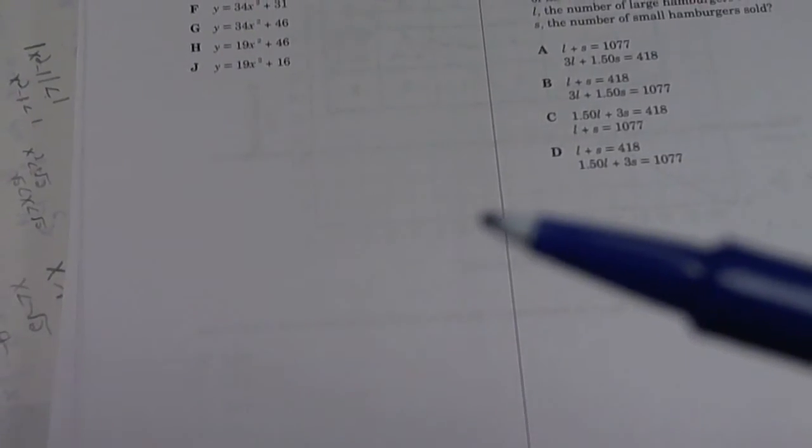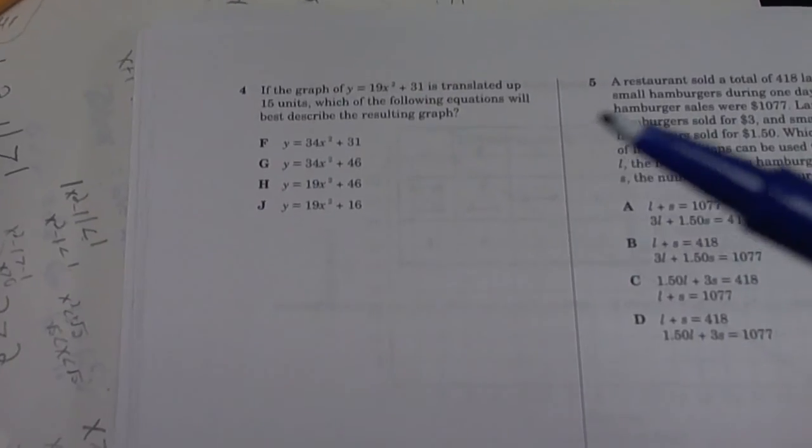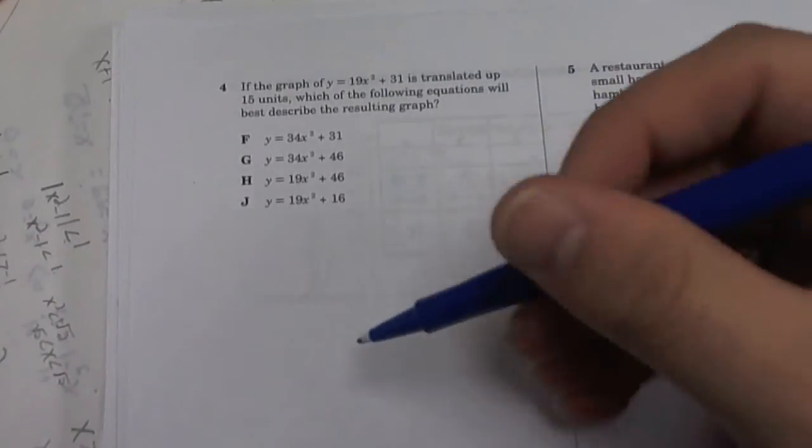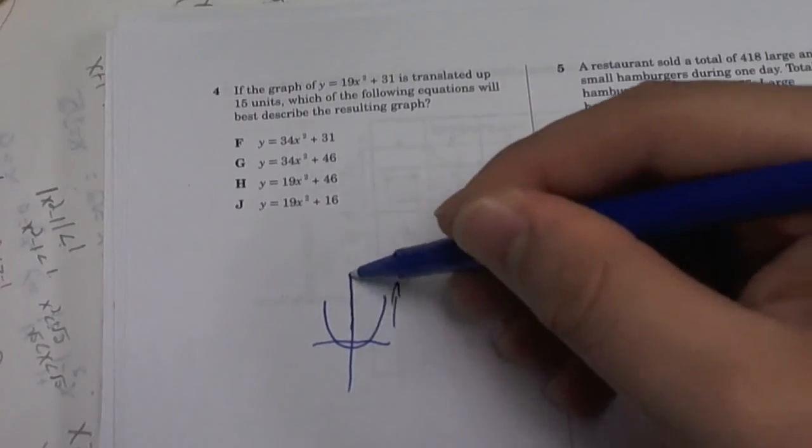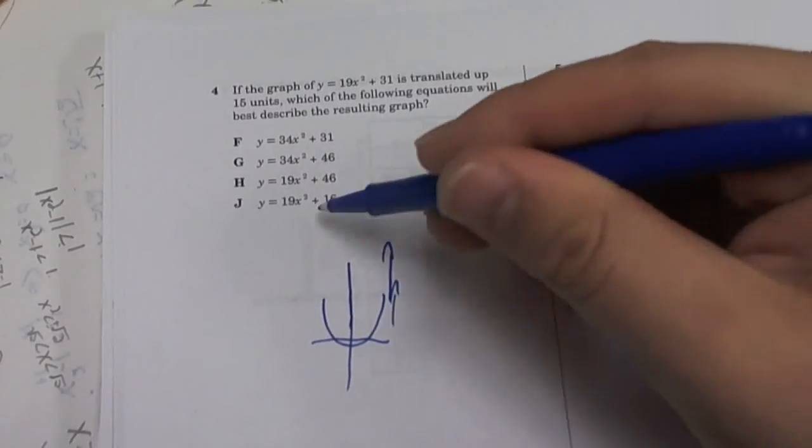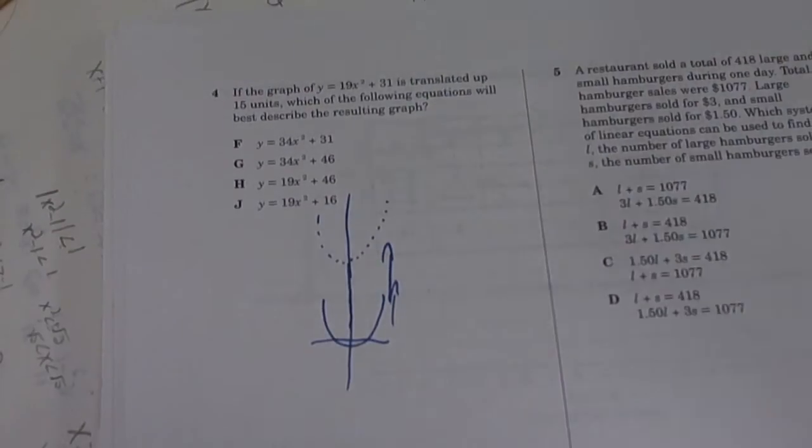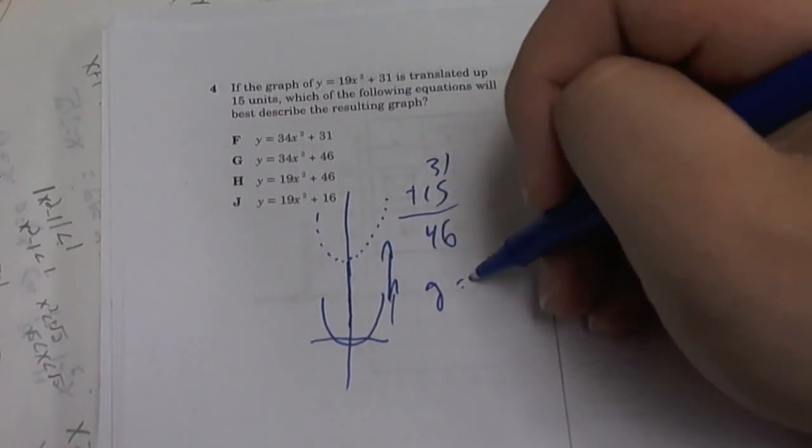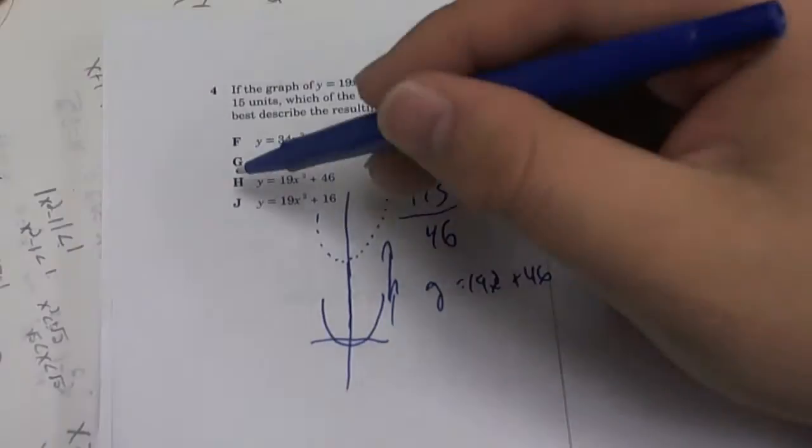Number 4. The graph. If the graph of y equals 19x squared plus 31 is translated up 15 units, which of the following equations will best describe the resulting graph? Alright, so translated up just means that if you have an equation looks like this and you translate it up, means you're just going to move it up whatever space they tell you. It's still going to keep the same shape. It's just going to be higher. So you move it up a few spaces and it's going to look like this. So here it says you're going to add 15 units. So you're going to move it up 15. So 31 plus 15 is 46. So our new equation is y equals 19x squared plus 46. So the answer is H.